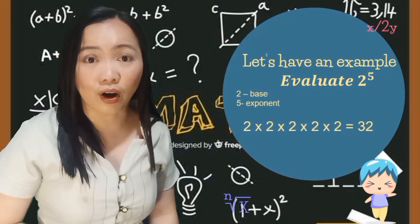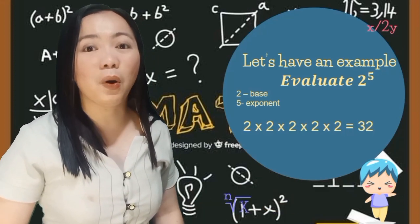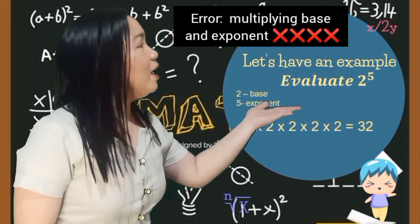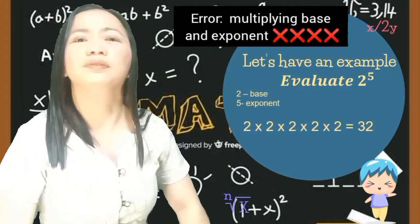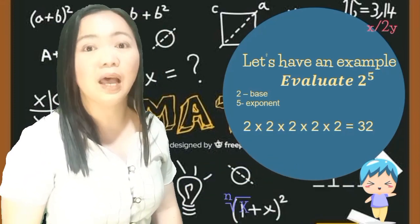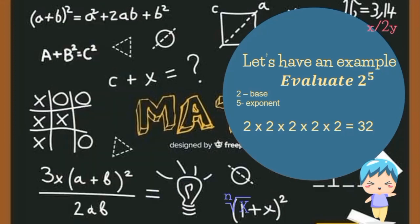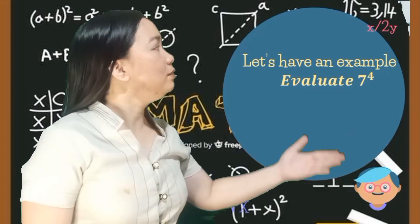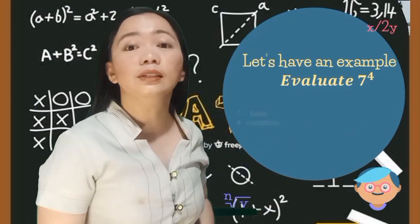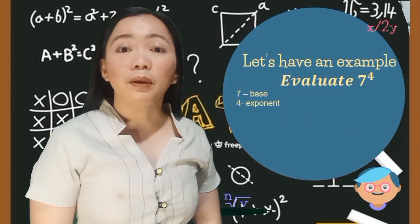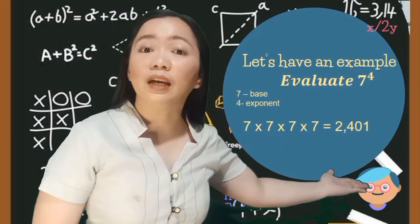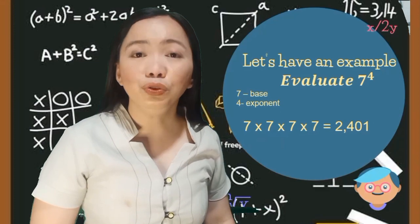There is a common error students make when evaluating the exponent — they multiply the base and the exponent, and that is very wrong. Again, the exponent tells you how many times you multiply the base by itself. Let's evaluate 7 raised to the 4th power. 7 is our base and 4 is our exponent. That means multiplying 7 four times to itself: 7 times 7 times 7 times 7, which equals 2,401.